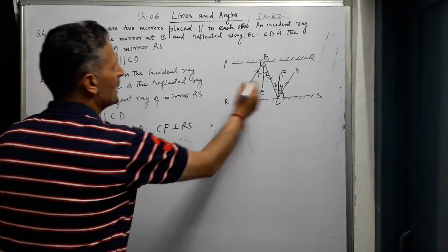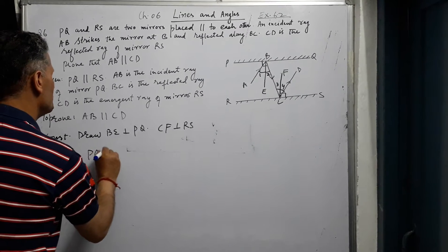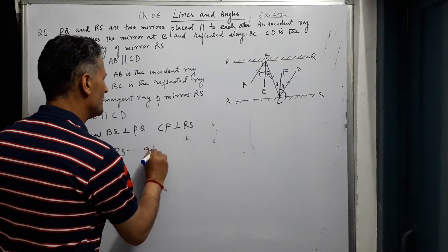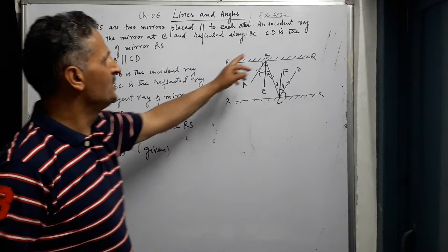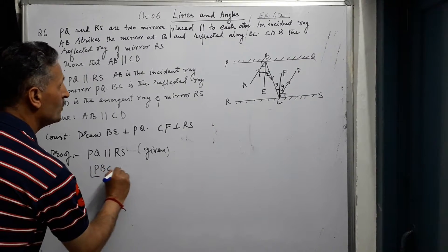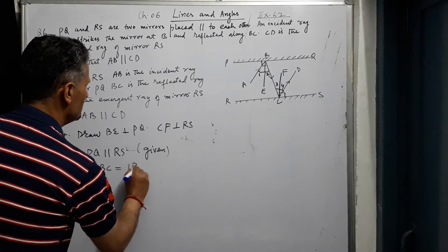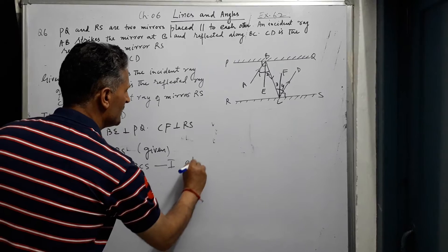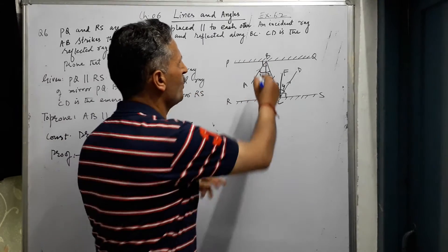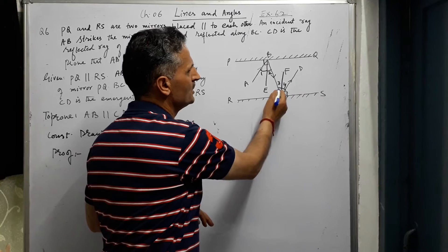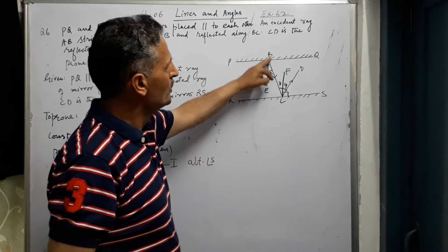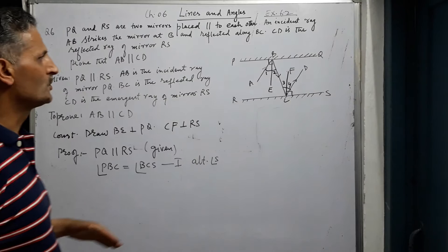PQ is parallel to RS — these are the two given parallel mirrors. And BC is the transversal. Therefore, angle PBC equals angle BCS because they are alternate angles, since PQ is parallel to RS. So angle PBC equals angle BCS.